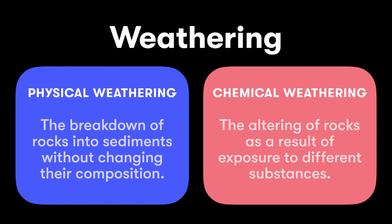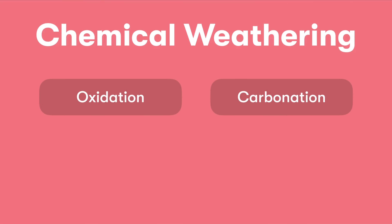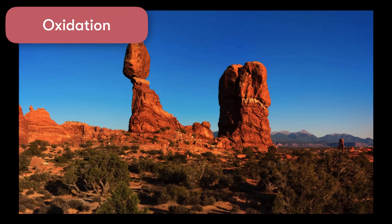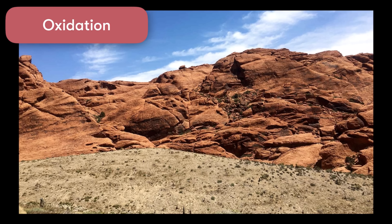Now let's shift gears to the second type of weathering: chemical weathering, the altering of rock as a result of exposure to different substances. We'll look at two main examples: oxidation and carbonation. Oxidation is the formation of rust — this occurs whenever the element iron is exposed to oxygen, whether in air or water. Many rocks around the world contain large amounts of iron, and as that iron reacts with oxygen, it physically rusts. The result is rocks with an orange color that are actually breaking down, as the iron oxide formed is very crumbly.